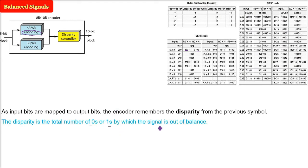Disparity is the total number of 0s and 1s by which the signal is out of balance. You calculate how many 1s and how many 0s there are, take the difference, and you'll know whether 1s or 0s are higher. For example, if you have two and three, the subtraction is one, so one is out of balance.